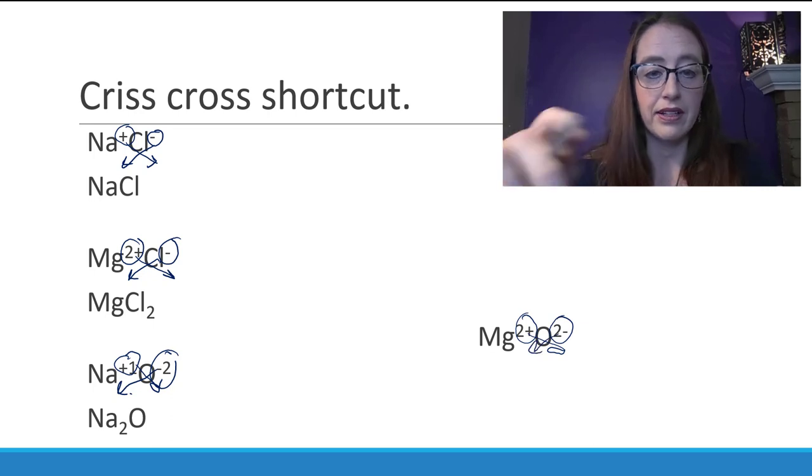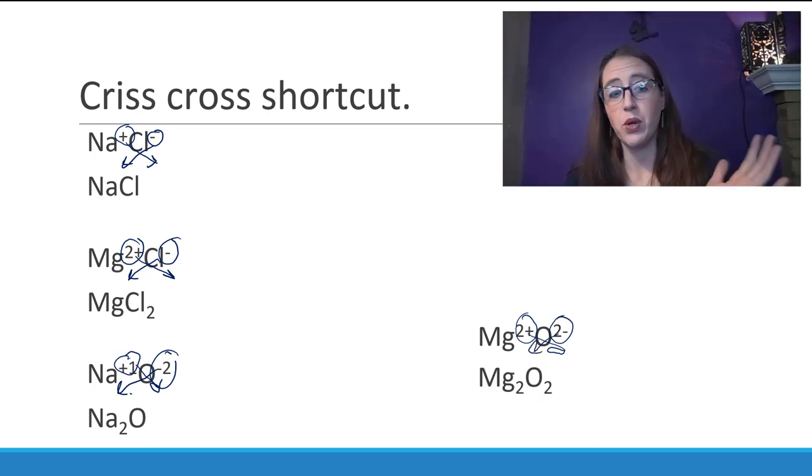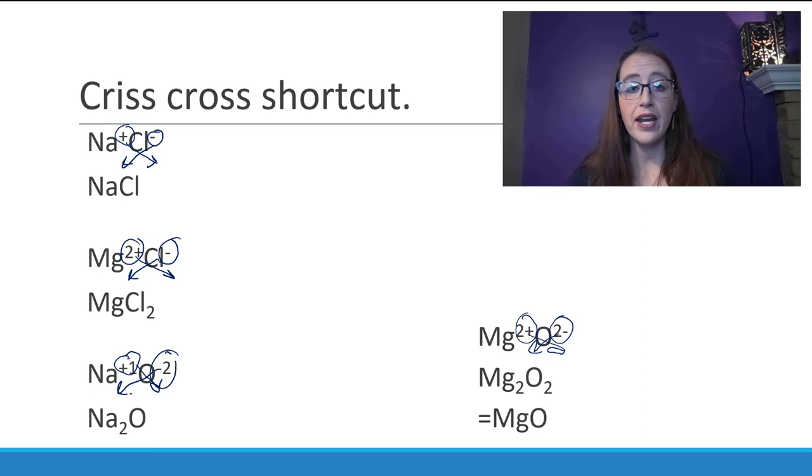Well it would give us Mg2O2, and that is not the lowest ratio, right? We can reduce that down. So if you use the crisscross trick, make sure that at the end you always check is this the lowest ratio, and then divide by whatever number you need to to get it down to the lowest ratio. In this case it's just one of each, because the Mg has a plus two, the O has a minus two, and so they balance out if you just have one of each.